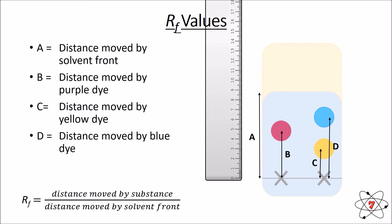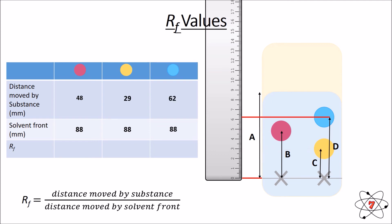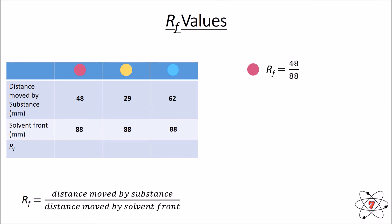We record these values in a table. The solvent front moved 88 mm, so all calculations use 88 as the denominator. Dye B moved 48 mm, dye C moved 29 mm, and dye D moved 62 mm. So for the purple dye: 48 ÷ 88 = RF value of 0.55. For the yellow dye: 29 ÷ 88 = RF value of 0.33.